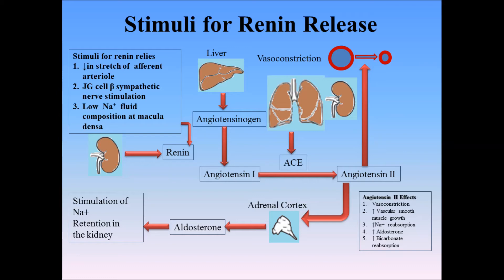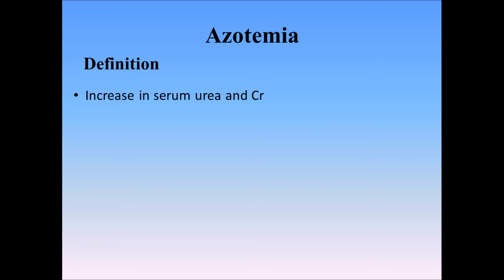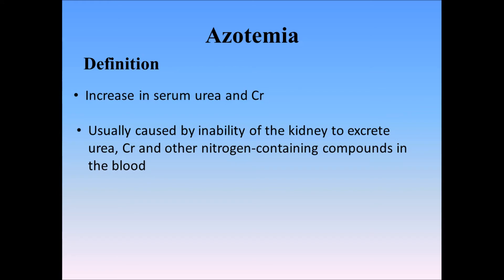Now let's talk about azotemia. By definition, any increase in serum levels of urea and creatinine due to the inability of the kidneys to excrete urea, creatinine, and other nitrogen-containing compounds is called azotemia.